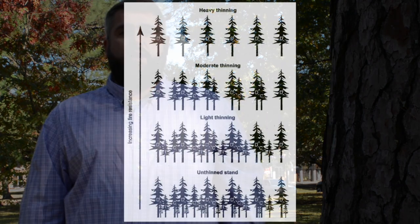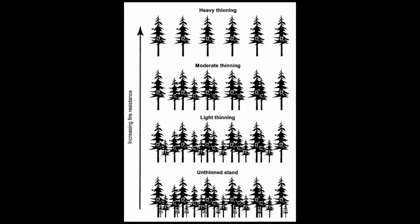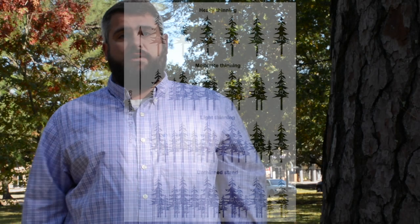Another very common practice in the middle of a rotation is thinning, where you remove the trees that are less desirable or less likely to survive or be good products at the end of the rotation. In the U.S. South most of our thinning is commercial — the landowners will make money harvesting trees and improving their stand — and then we're back to the end of the rotation where you're looking at regeneration treatments again.